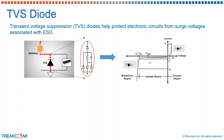In the reverse biased region, specifically in the leakage region, the diode is still not turned on. Under this condition, there is a very minimal current flowing through the device, which is not actually affecting the performance of the circuit to be protected.